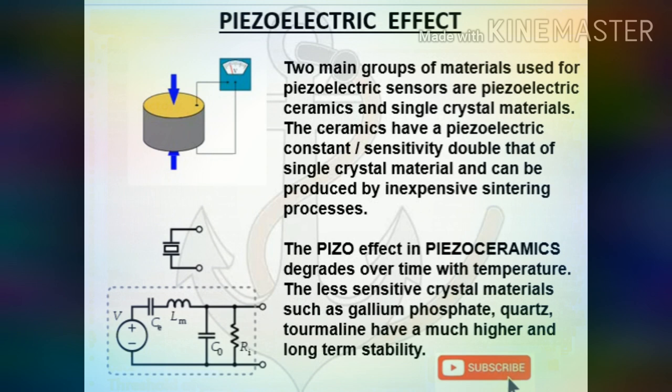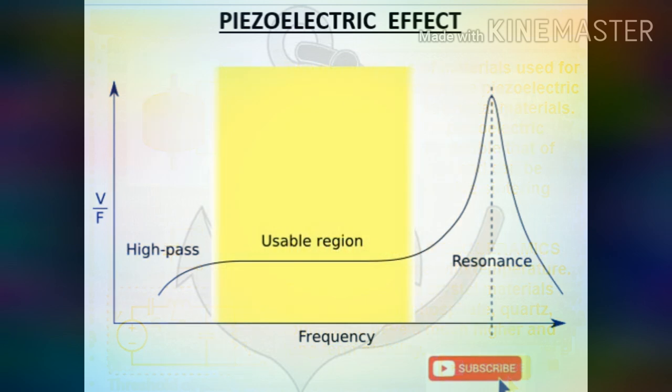Piezoelectric effect: two main groups of materials used for piezoelectric sensors are piezoelectric ceramics and single crystal materials. The ceramics have a piezoelectric constant sensitivity double that of single crystal materials and can be produced by inexpensive sintering processes. However, the piezo effect in piezo ceramics degrades over time with temperature. The less sensitive crystal materials such as gallium phosphate, quartz, and tourmaline have much higher long-term stability.